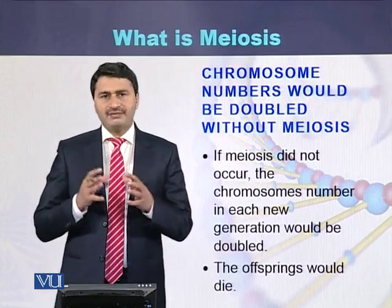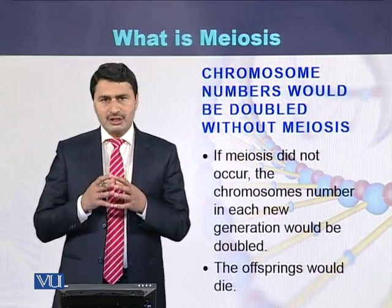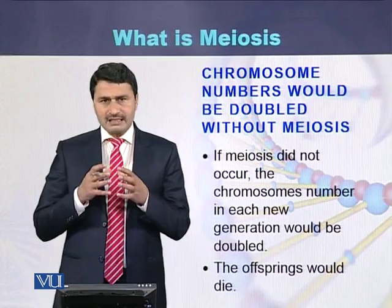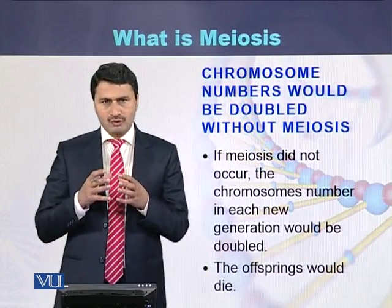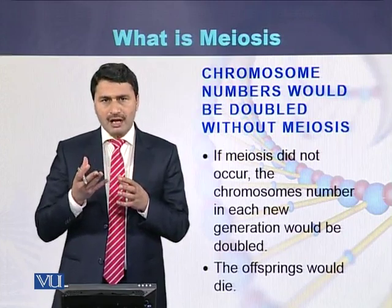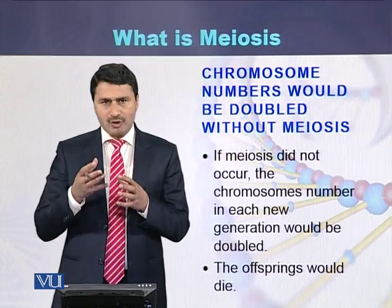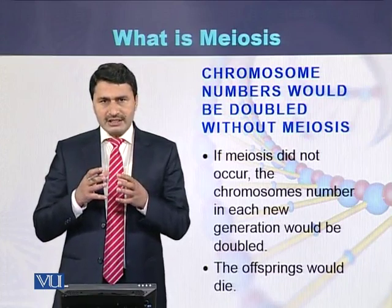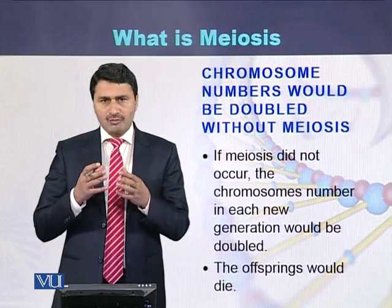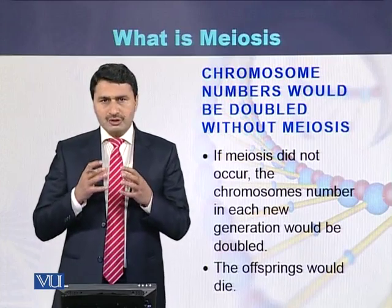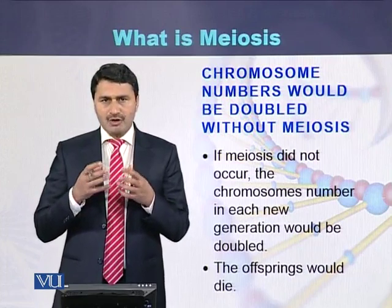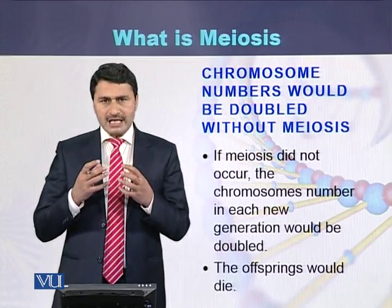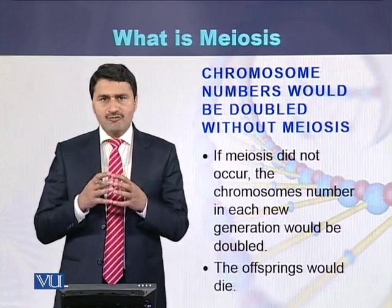What will happen if there is no meiosis? If there is no meiosis, during each generation the number of chromosomes will be doubled. If a cell has 2n chromosomes, during the next generation it will become 4n — from diploid to tetraploid — and in the third generation it will become 8n. So it is necessary that during meiosis the number of chromosomes should be reduced. If the number of chromosomes will not be reduced, the individual or the zygote will not survive and the individual will die.